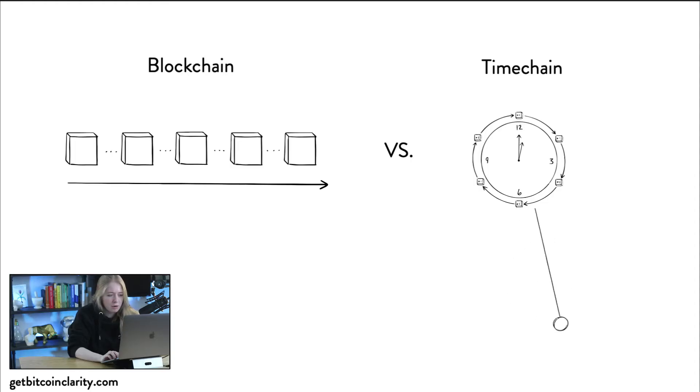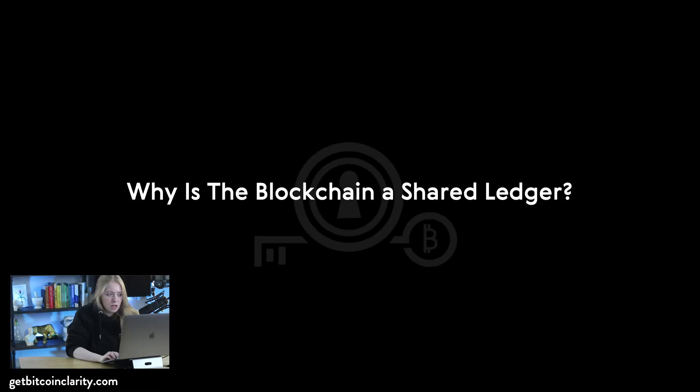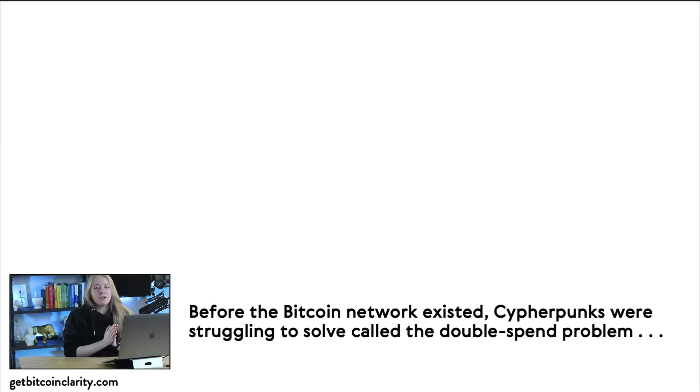If you've been following along, the previous video was about the mental model called the time chain. Satoshi originally never called the blockchain a blockchain, at least early on. His first instinct was to call it a time chain, as he did in a comment of the original Bitcoin source code. On the left is the blockchain model and on the right is the time chain model. The question for this video is: why is there a shared ledger?